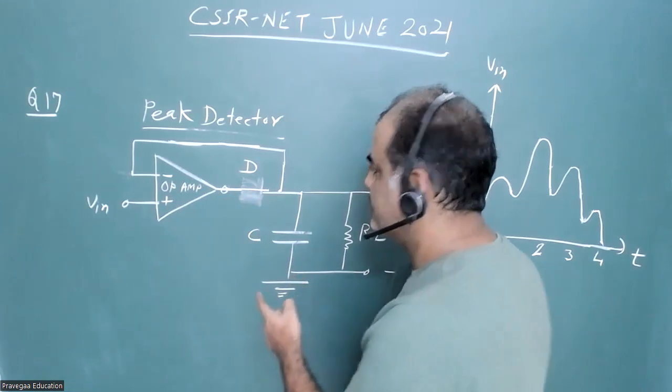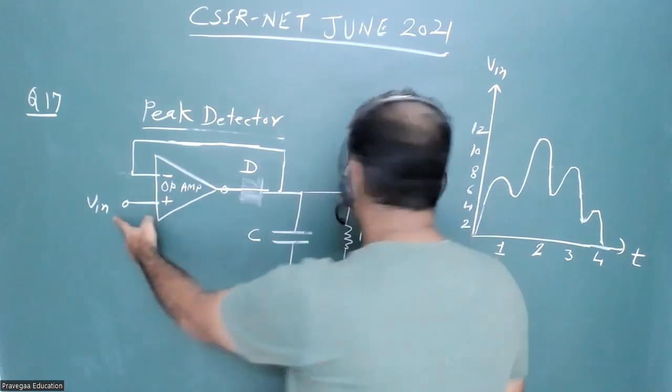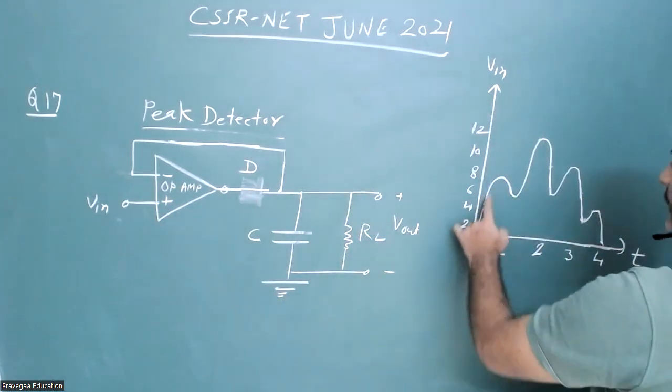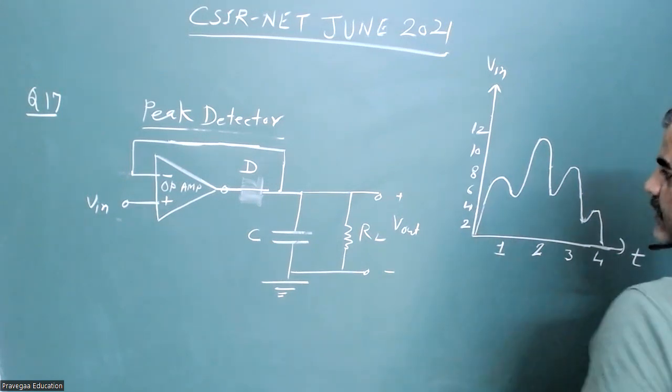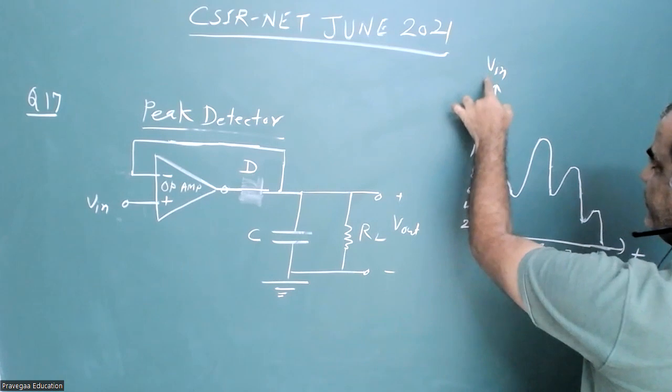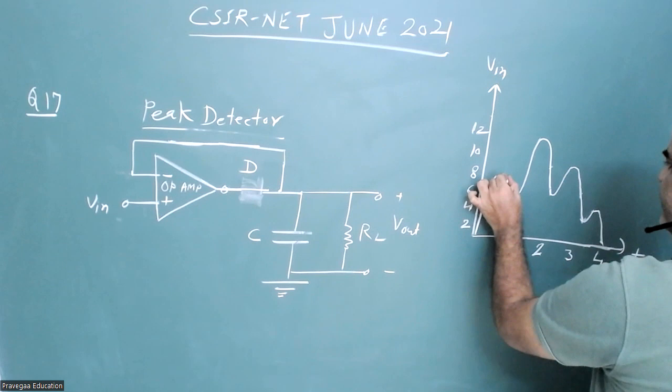This capacitor will charge to the peak value of this V input. For example, here we are charging this capacitor with input voltage. Initially, this will be your output when you are charging with V input. Output will also increase, and this will go up to the peak value of input.